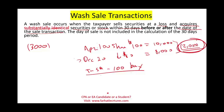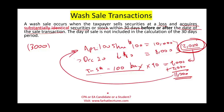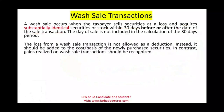The loss will be tagged to my new cost basis. Let's assume the stock went up to $90 and I bought them for $9,000. The loss that I deferred, $2,000, will be added to the $9,000, so my new basis is $11,000. And what's my holding period? My holding period started April 1st when I bought them initially. So that's the basic idea behind wash sale.